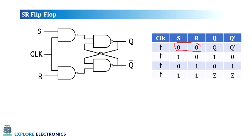So we say the previous state will be the output when S and R are 0 and 0. When S and R becomes 1 and 0, Q is 1 and Q bar is 0. When S is 0 and R is 1, Q is 0 and Q bar is 1. When S and R both become 1 and 1, this flip-flop will not provide a stable output — it is an intermediate state, represented as Z.